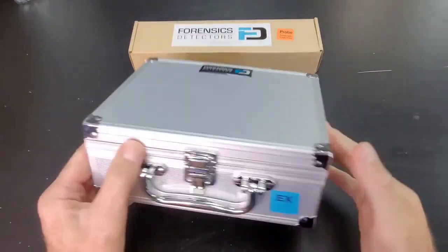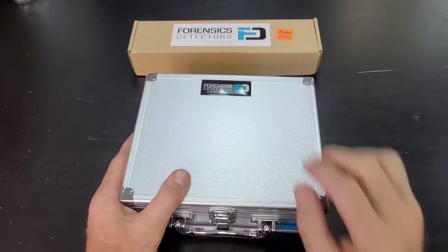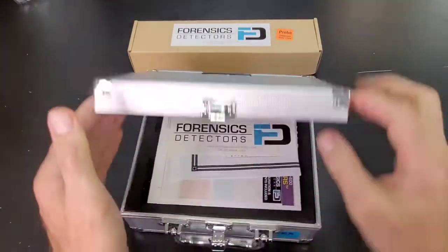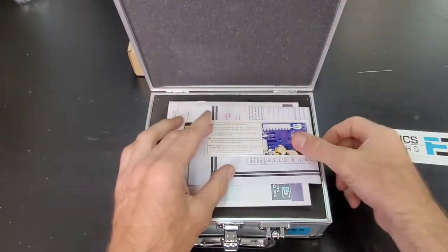Let's get to the unboxing of our explosive combustibles analyzer. It comes in a very nice aluminum case as you can see, and the probe comes in that little box right there. Let's unclip it. You'll see your free sticker, very nice.